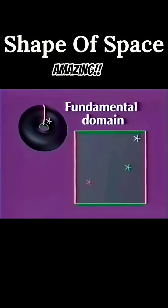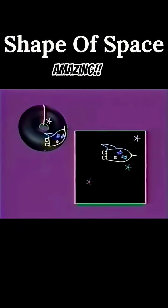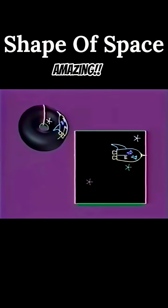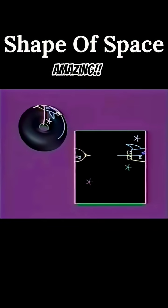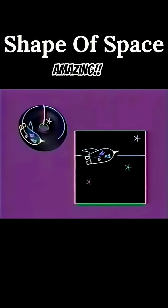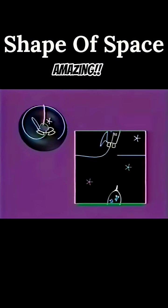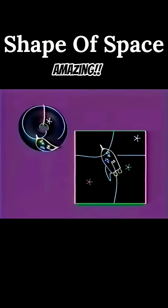We now see their universe using only two dimensions. The Flatlanders can still travel about their universe as before. When looking at a fundamental domain, we must imagine that its edges are glued together.